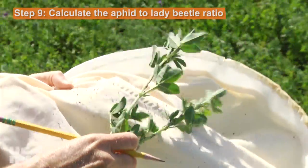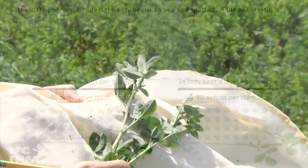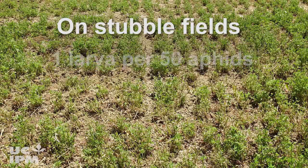For pea and spotted alfalfa aphid thresholds, do not apply insecticides if there is an average of four or more adult lady beetles or three or more lady beetle larvae per sweep for every 40 aphids counted per stem. On stubble fields this ratio is one larva per 50 aphids.